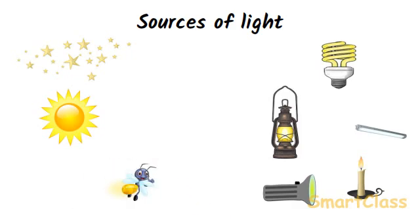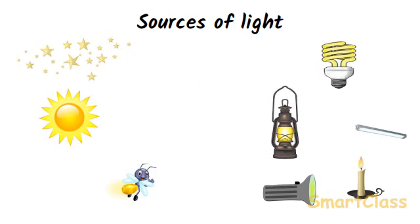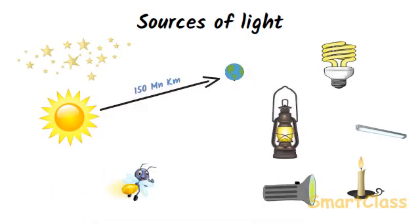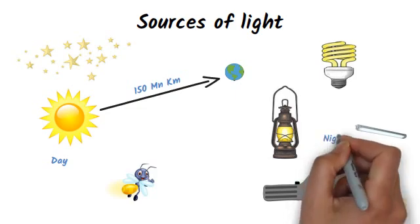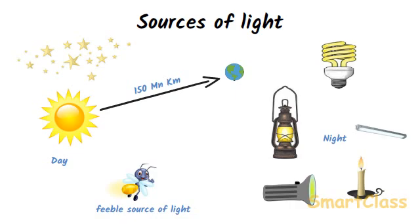The most important source of light for us is the sun. The sun is a very bright source of light. Even though the sun is 150 million kilometers away from us, its light makes the daytime bright on the earth. At night we use an electric bulb, tube light, kerosene oil lamp, candle or torch as the source of light. The firefly is a very feeble source of light. Though a firefly looks very pretty in the dark night, its light is so faint that it is of no use to us.